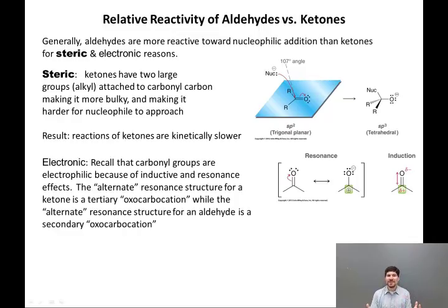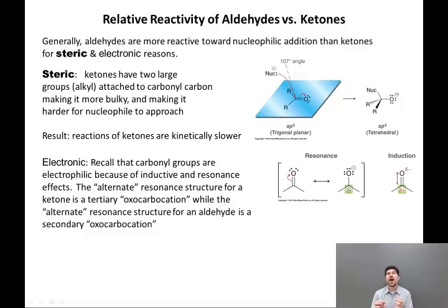Inductive effects are simply the fact that the C=O pi bond is polarized due to oxygen's greater electronegativity, with a partial positive charge on carbon and a partial negative charge on oxygen. The resonance effect is that you can draw an alternate resonance structure where there is a positive charge on the carbonyl carbon and a negative charge on the carbonyl oxygen — you take those two electrons that were the C=O pi bond and put them both onto oxygen. This is not a favorable resonance structure, but it does explain the reactivity of carbonyl groups.